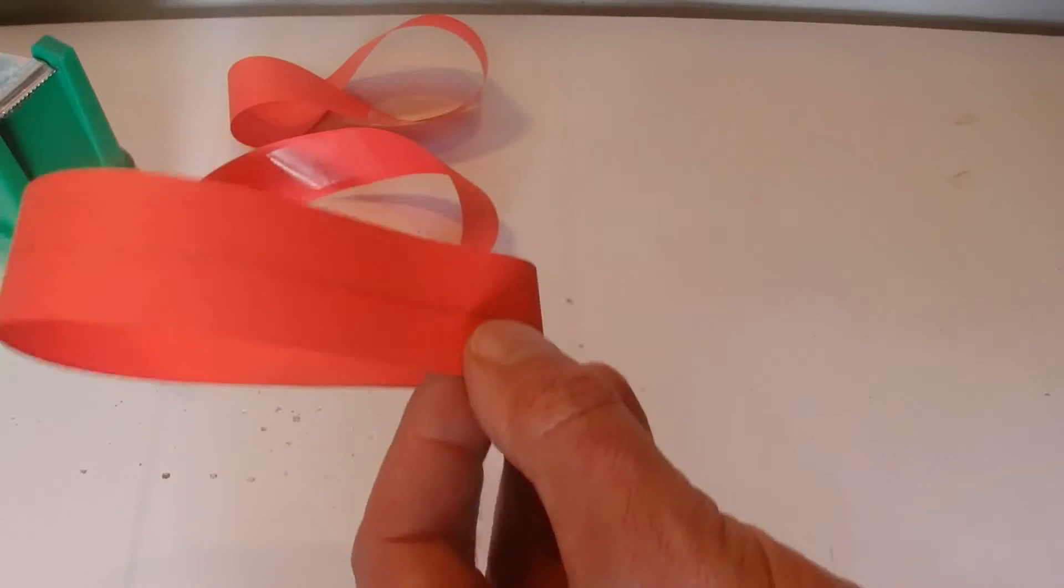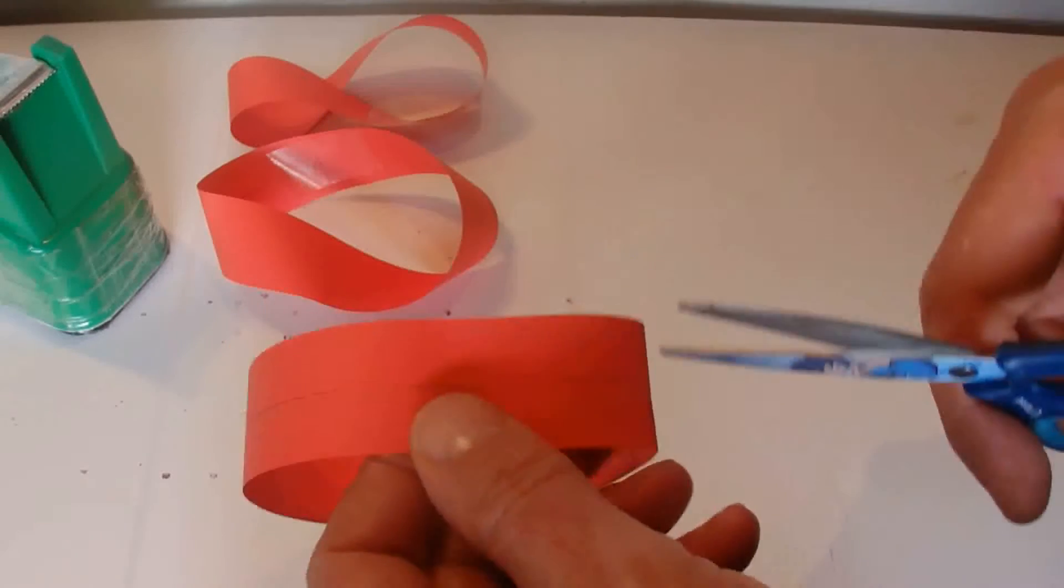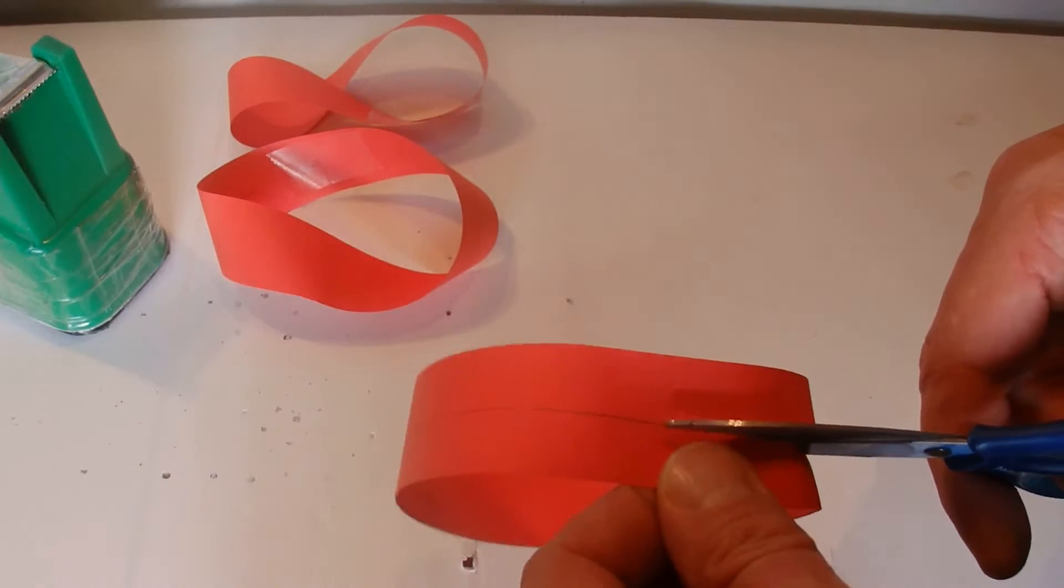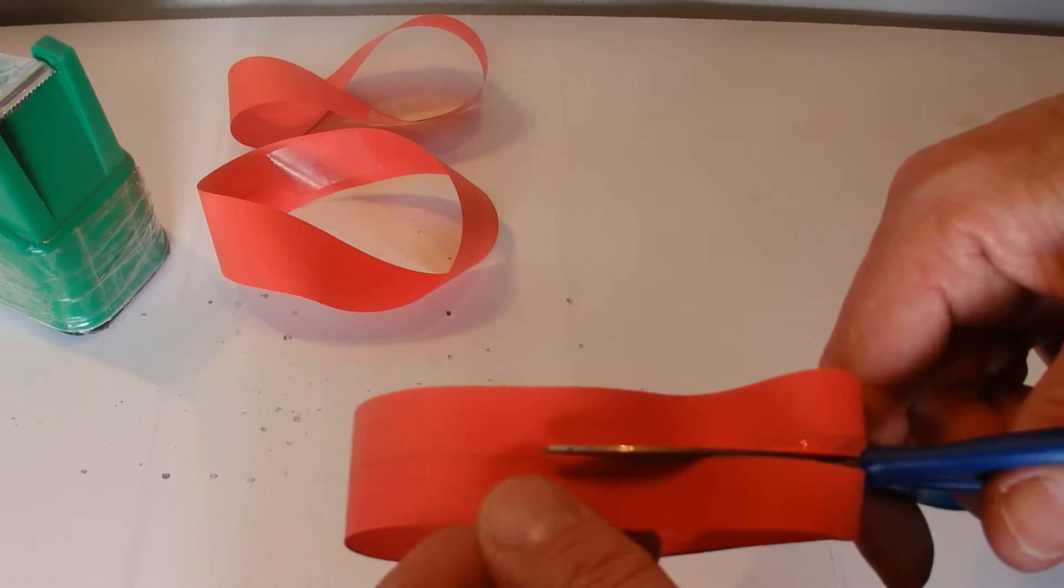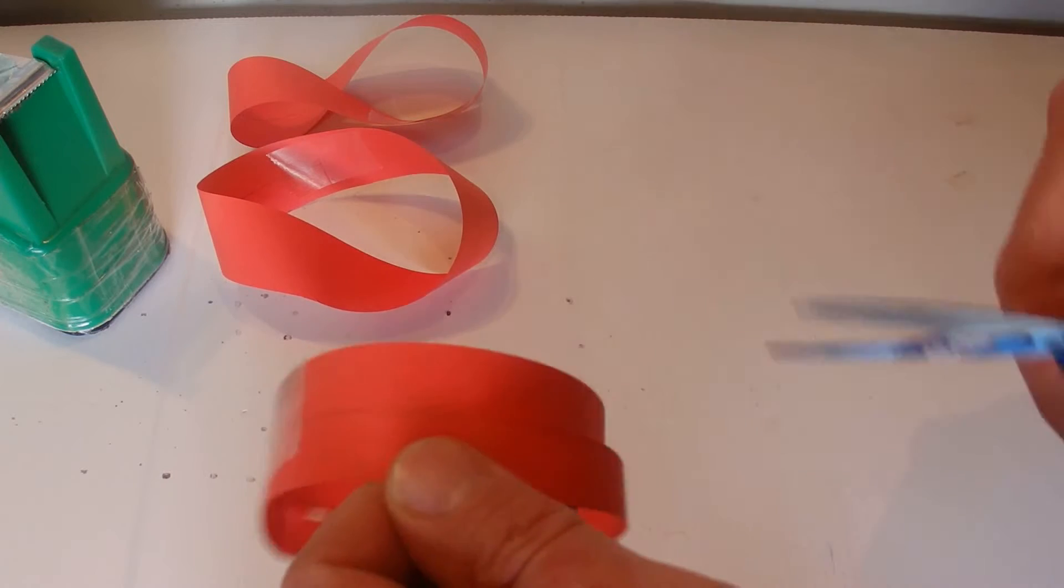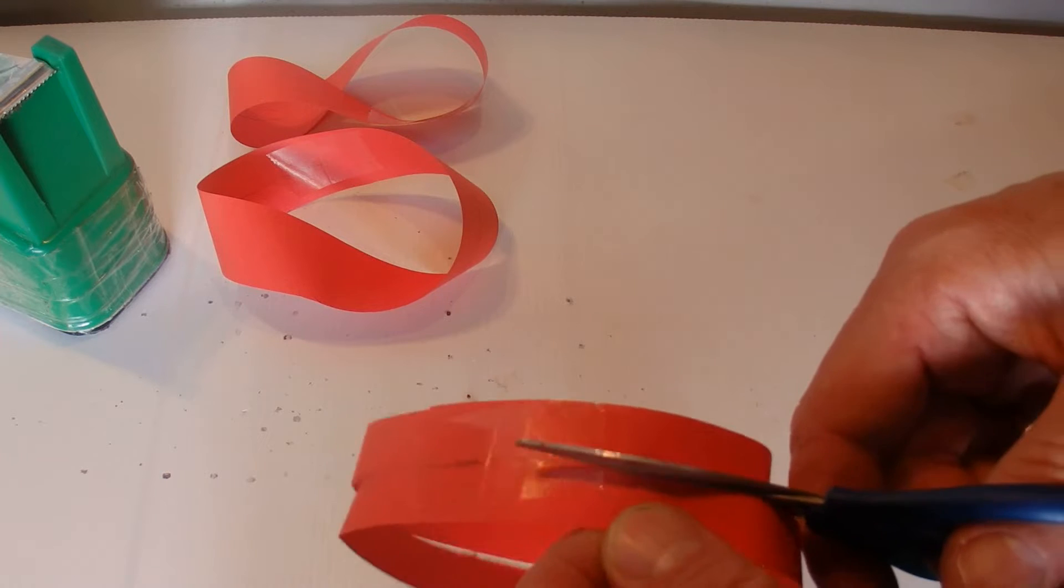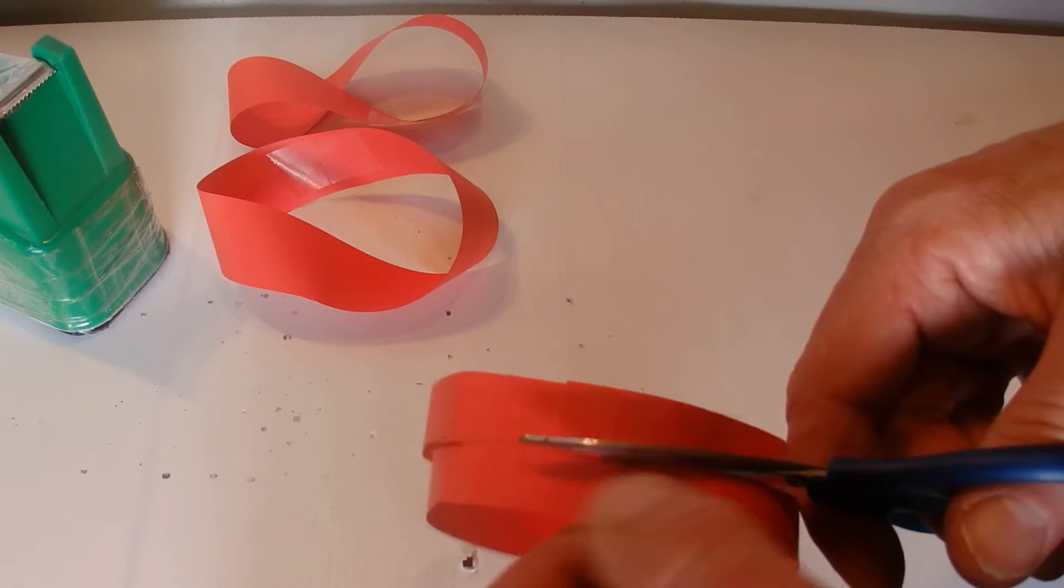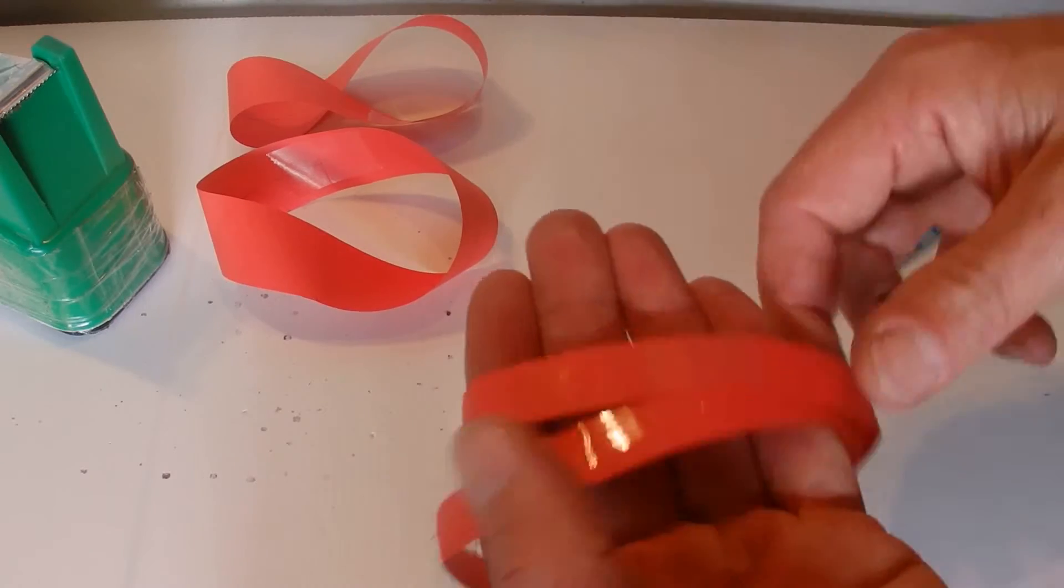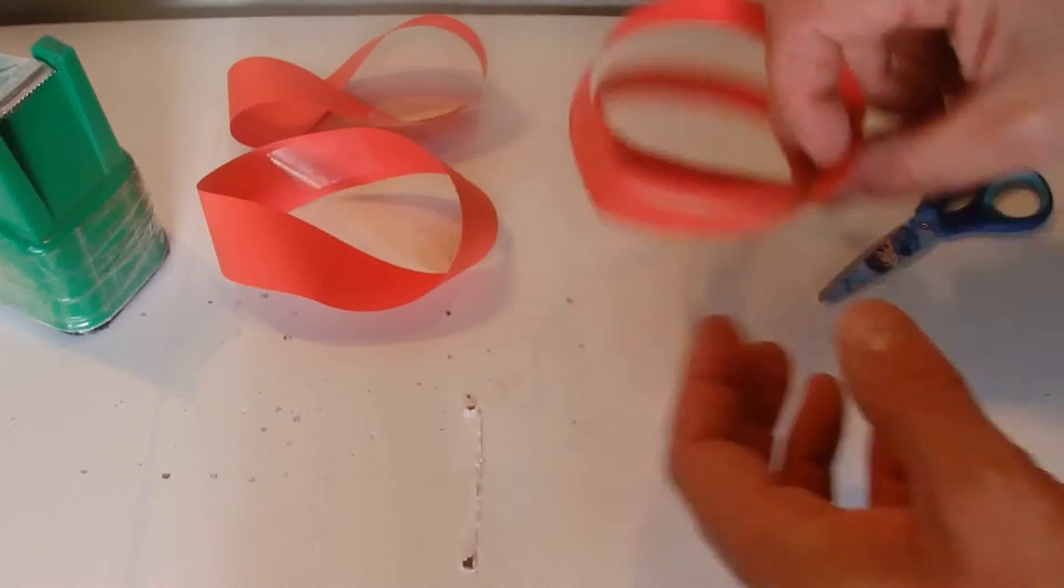Now what I'm going to do is with the first loop. This should be fairly easy to predict what happens when I cut this loop down the center with the scissors. Be very careful when you're working with scissors that you don't cut yourself or hurt yourself in any way. If you're a kid you might want to ask an adult to help you. So this one's fairly obvious—when you cut that down the middle you end up with two separate loops.